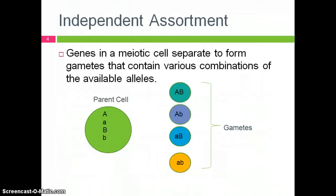As a quick review, the genes in a cell will separate and divide into the gametes in equal ratios of all the possible combinations. In this example, we are looking at a parent cell that has two particular genes. After cell division occurs, there are four different outcomes for the gametes, which each contain the different combinations.